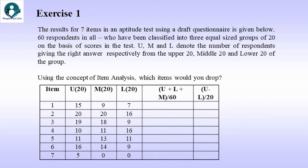Exercise 1. The results for 7 items in an aptitude test using a draft questionnaire is given below. 60 respondents in all who have been classified into 3 equal size groups of 20 each on the basis of scores in the test. So, U, M, and L denote the number of respondents giving the right answer respectively from the upper 20, middle 20, and lower 20 of the group. So, you must be knowing that 20 by 60 is 33%. So, we are looking at the upper 33% and lower 33% here, and we also have a middle group which is of a similar proportion.